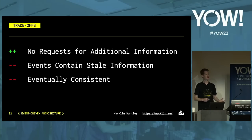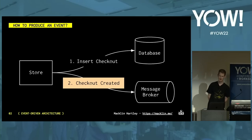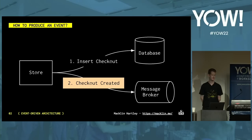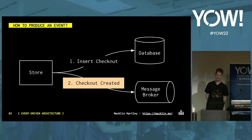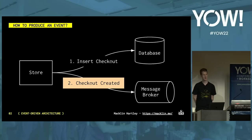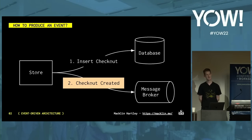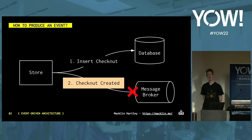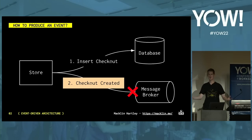Events are produced as a side effect of a change that has occurred in the system. For example, when we insert a checkout into our database, a 'checkout created' event is created at the same time, and we send that event to our message broker for other systems to consume. But the database and message broker are two different systems — what if the message broker is unavailable? This could cause our event to get lost. We don't have the luxury of an atomic transaction here. We need to guarantee that an event gets published when a change occurs in the database.